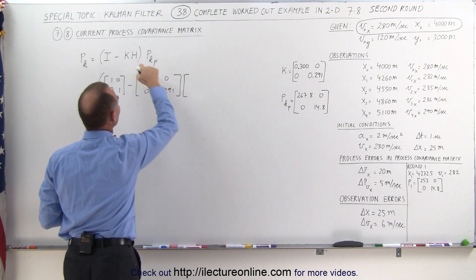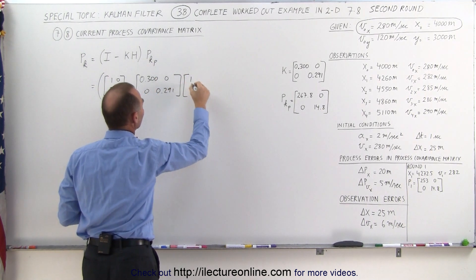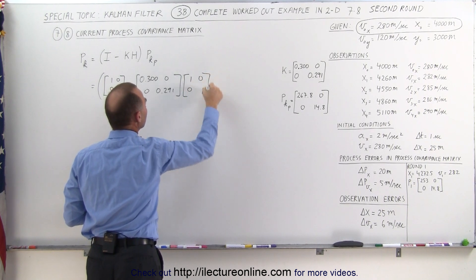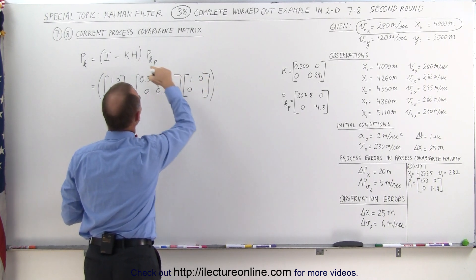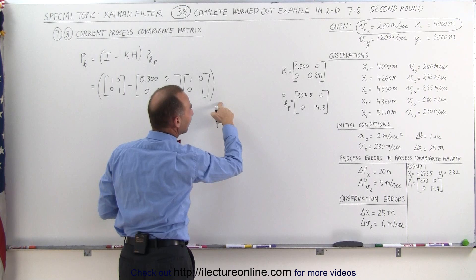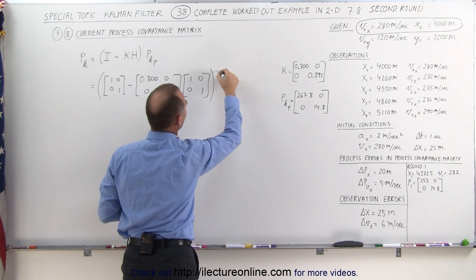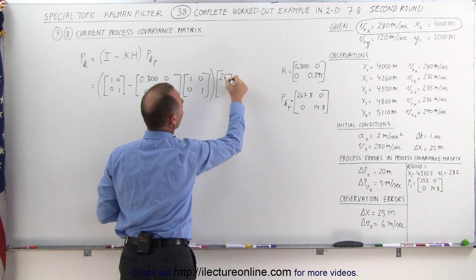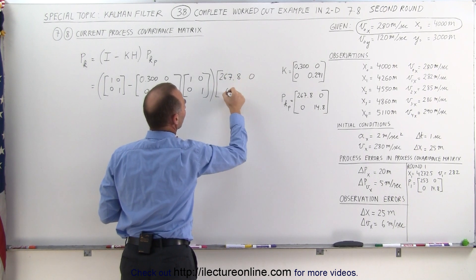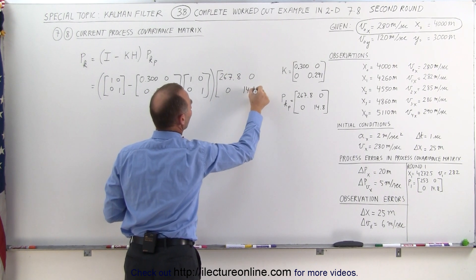Multiply times the matrix required here to keep the proper format, which in this case simply will be the identity matrix, and then we multiply that times the predicted, and here we have the numbers for the predicted process covariance matrix 267.8, 0, 0, and 14.8.